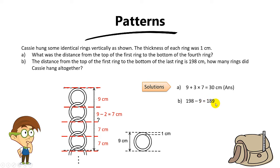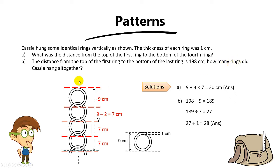Then you take 189 divided by 7 to find how many intervals there are. So 189 divided by 7 gives 27 — but this 27 is not the answer, because 27 is the number of additional rings. To find the total number of rings, you have to add the first ring. So 27 plus 1, the answer is 28 rings.